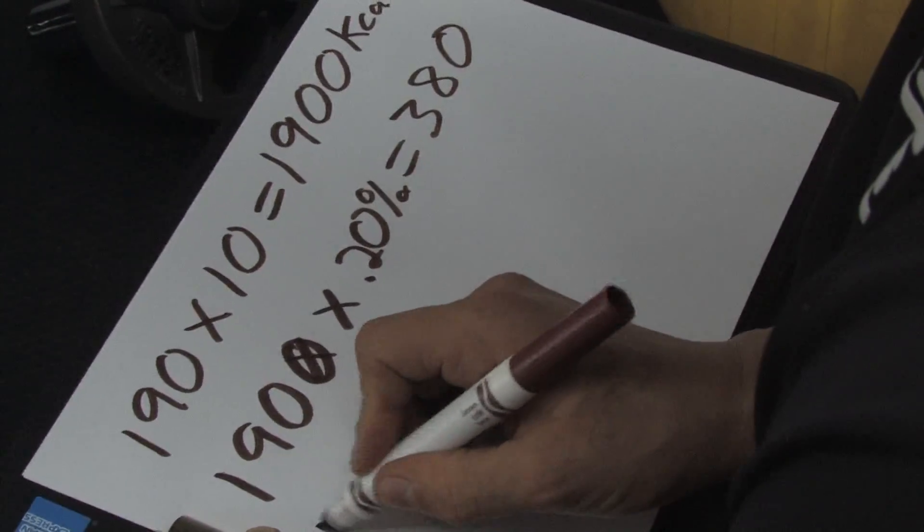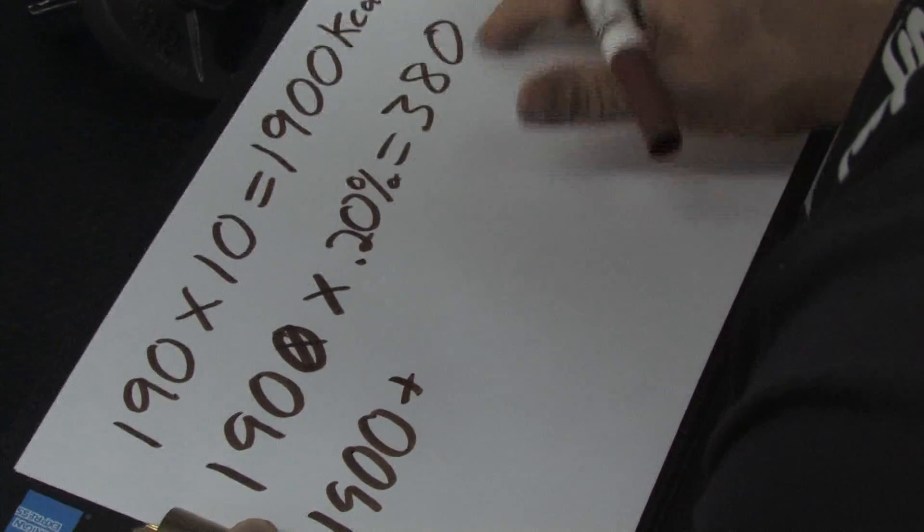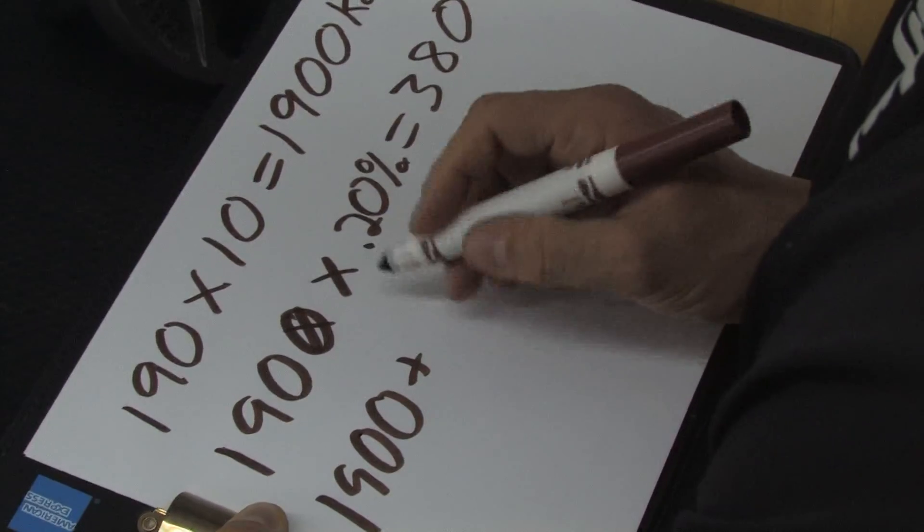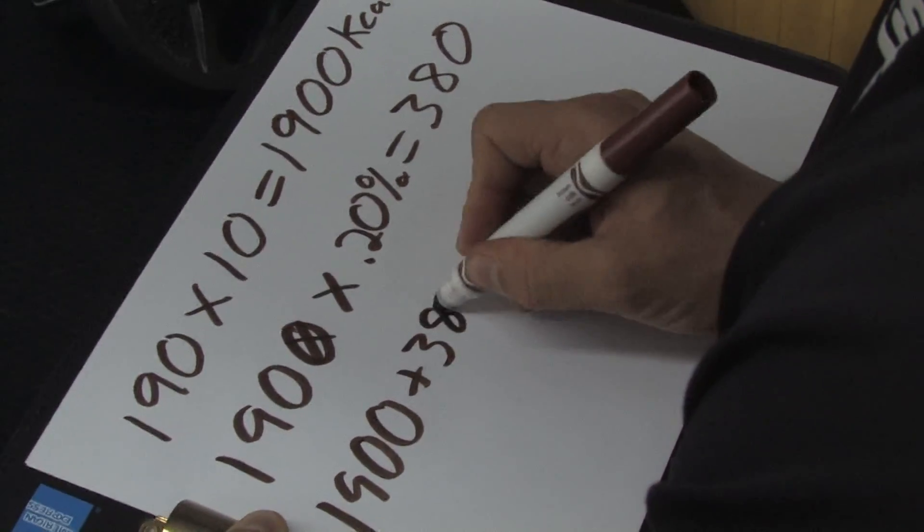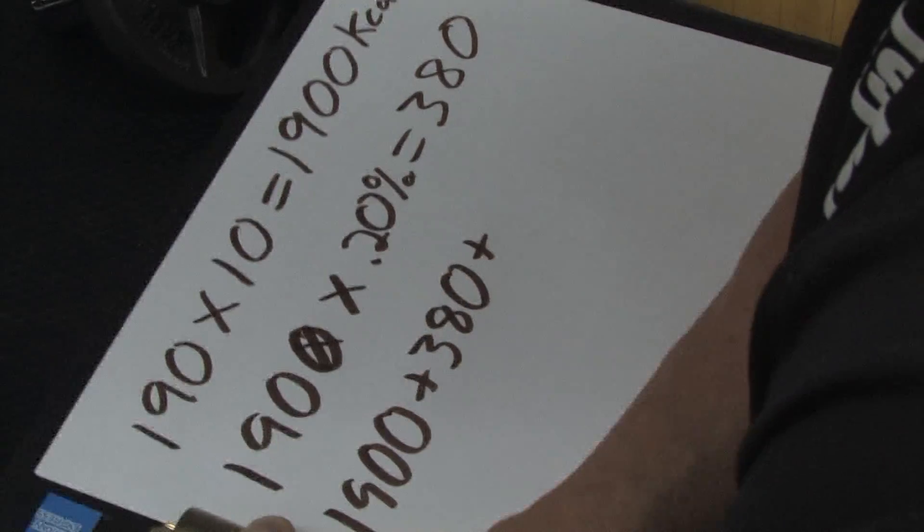So now you're going to take that number, 1900. You're going to add in your activity level, and then you're going to add in exercise if you do it.